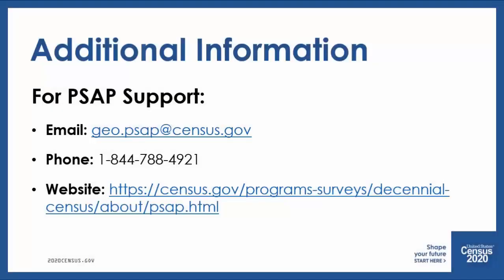If you have any questions regarding how to use TigerWeb to review your 2020 statistical geographies, please email geo.psap@census.gov or call toll-free at 1-844-788-4921. If you choose to use TigerWeb WMS and TigerWeb REST Services to view your 2020 statistical areas, please use the respondent guides or the TigerWeb user guide for instructions.